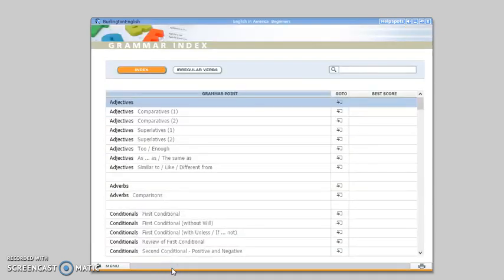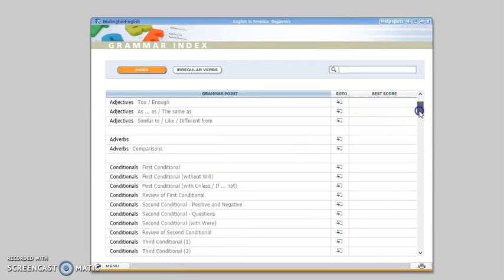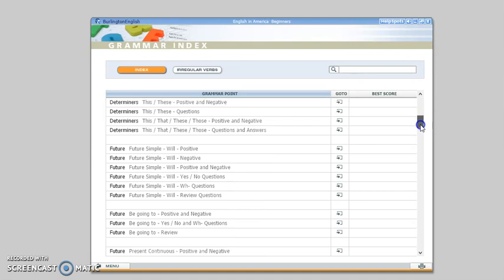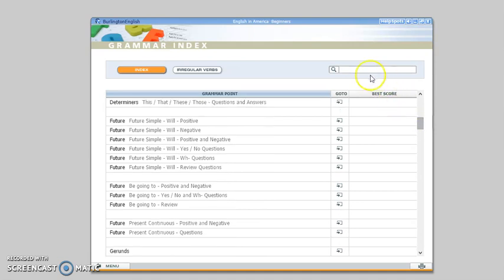Open the grammar section. Inside you will find several topics, all listed in alphabetical order, but you also have this search box at the top.